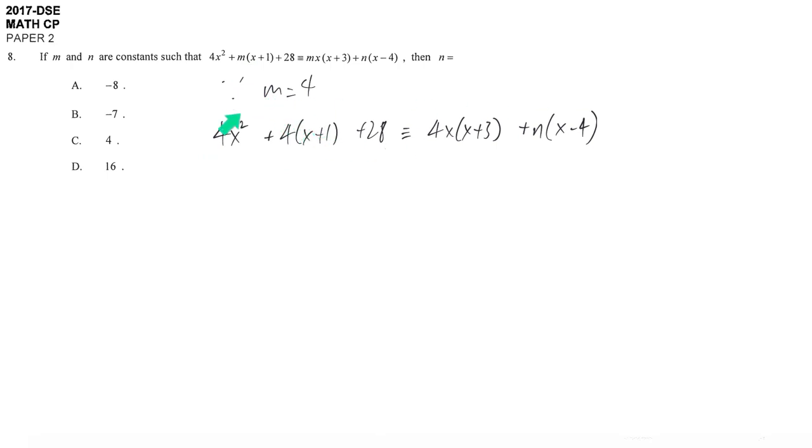We replace every m by 4 because we already know m is 4. After that, once again, this is always correct, so you just simply put any value of x. Let's say we take x is 0 because I think it's more convenient.